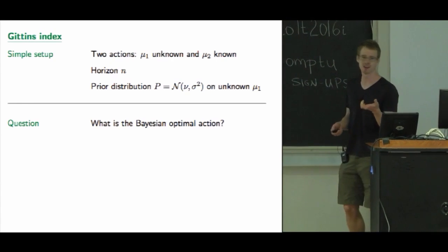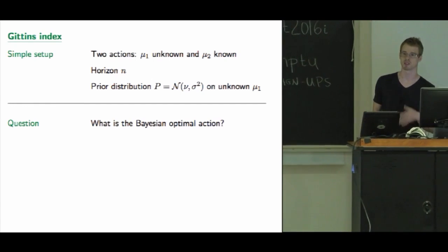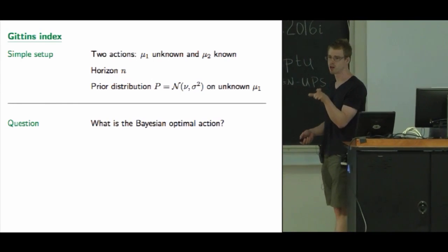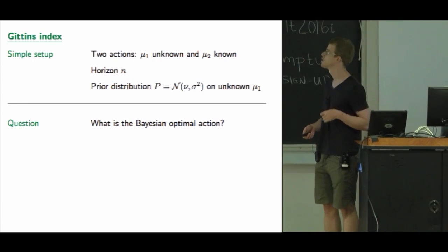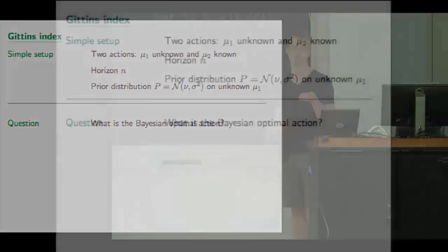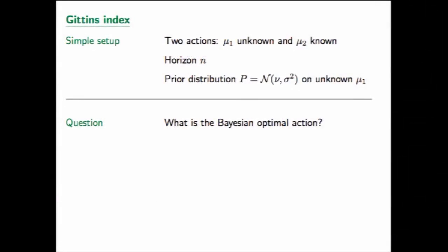So what is this Gittins index? It actually comes from an even simpler setup called the one-armed bandit problem — which sounds pretty boring, except that the one-armed bandit problem is actually a two-armed bandit problem where you have two arms and you know the return of the second arm. So you know Mu2 but you don't know Mu1. In the Bayesian setting, you have a prior on the unknown mean, and in this talk everything is Gaussian, so we use a Gaussian prior, which means we can compute the posterior.